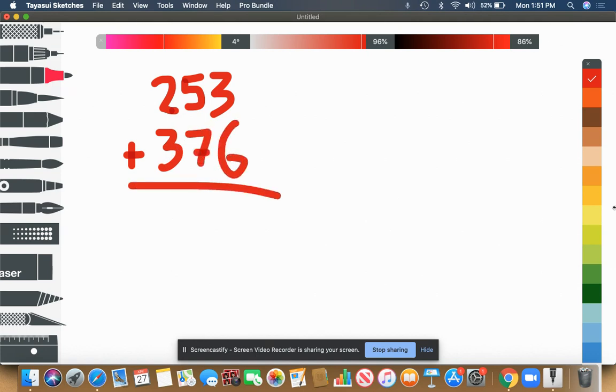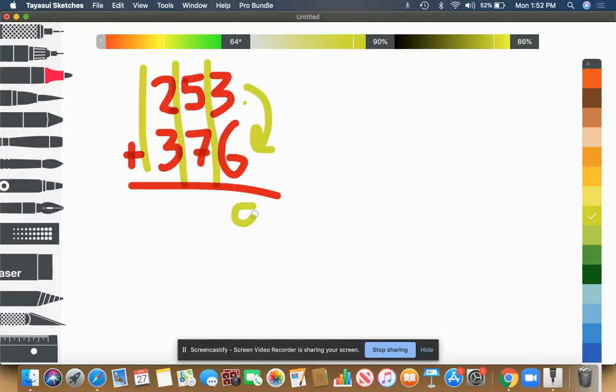All right, guys. So it's important to remember here, you just start with your ones column. You have ones here, tens here, hundreds here. Starting off with three plus six, we get nine.